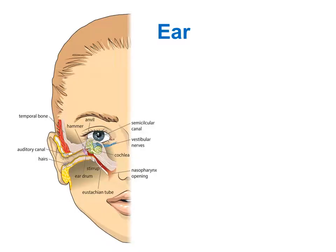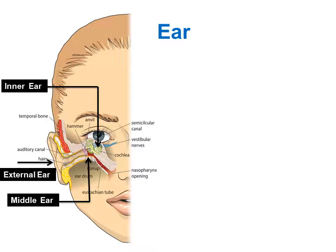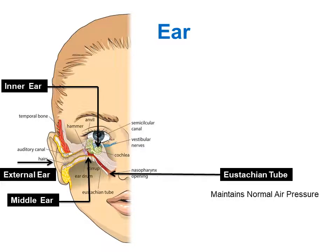Before learning about ear infections, let's learn about the ear itself. There is the external ear, the middle ear, and the inner ear. There is a thin tube that connects the middle ear to the back of the nose, called the Eustachian tube. The Eustachian tube helps maintain normal air pressure between the outer ear and the middle ear. That is why when there is a change in surrounding air pressure — for example, in an aeroplane or during an underwater dive — our ears get blocked. Chewing gum is advised so that air passes through the Eustachian tube and air pressure is equalized.